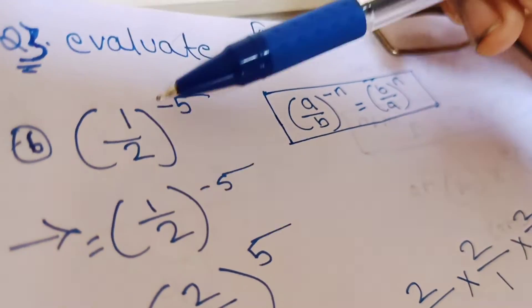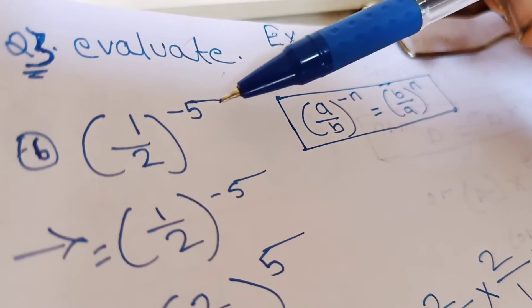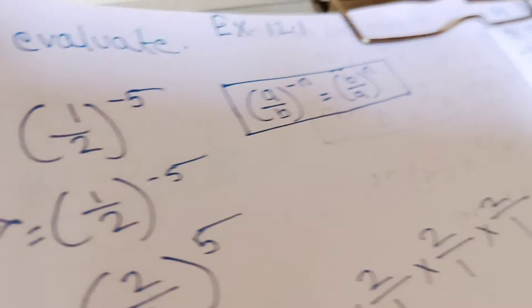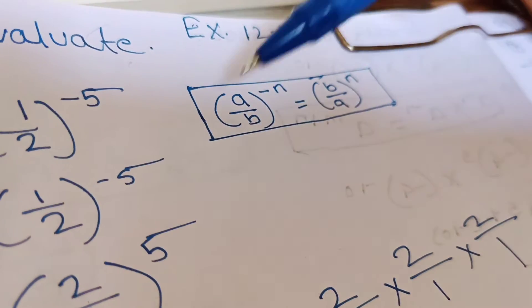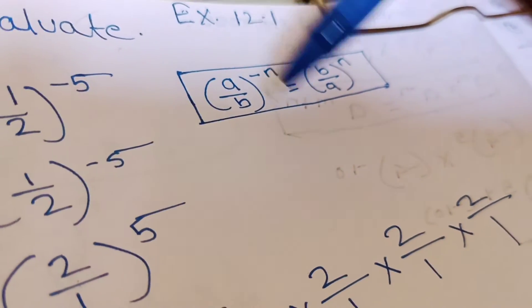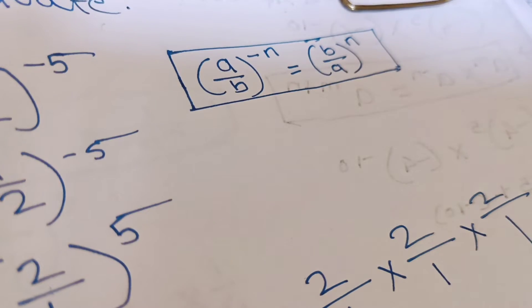So we have the values of 1 upon 2 power raised to minus 5. So we have to solve this example by using this identity. This identity is used to solve this question.